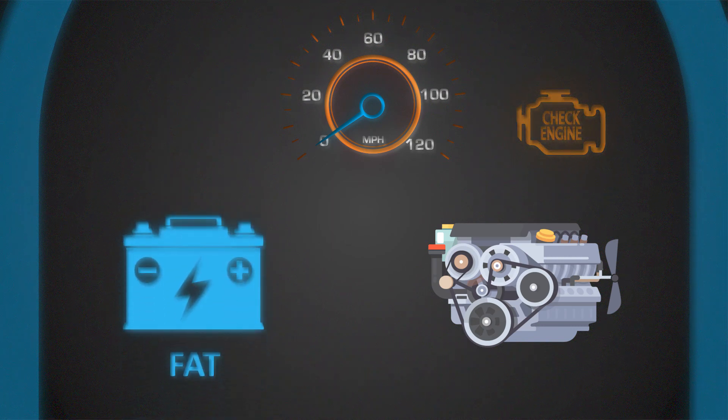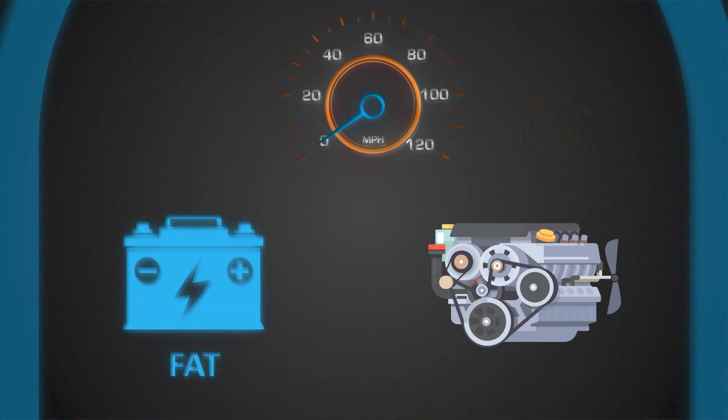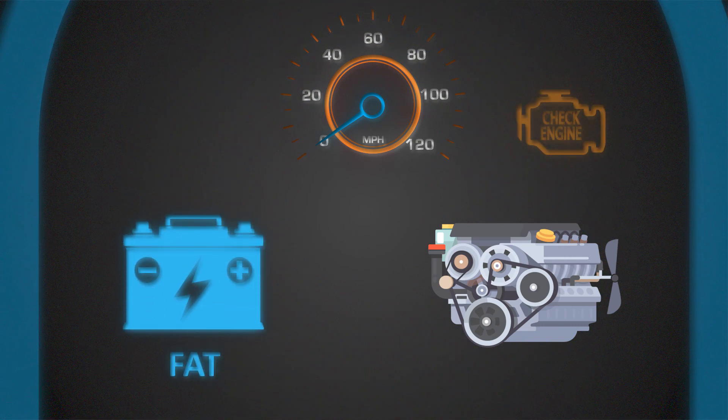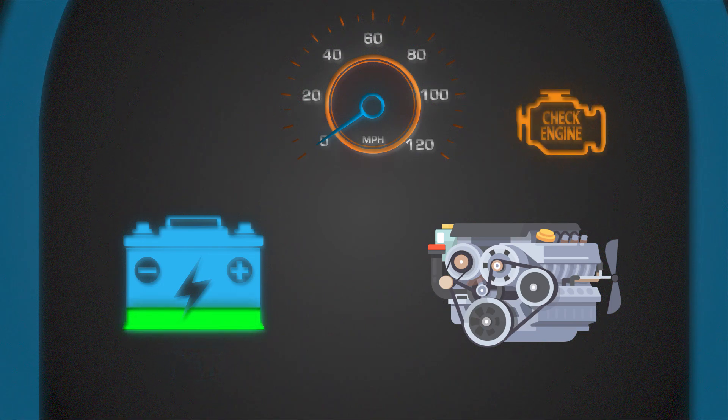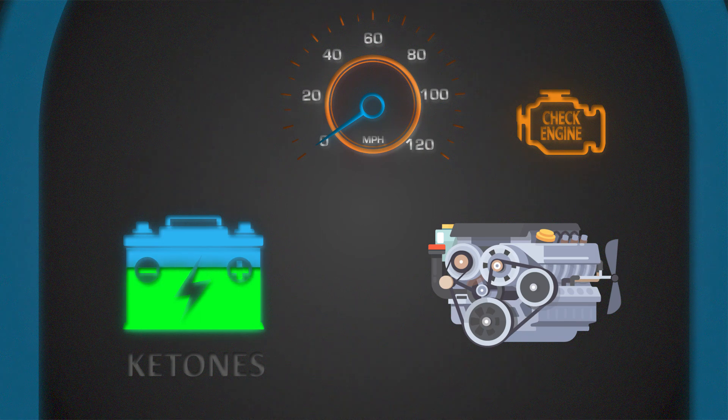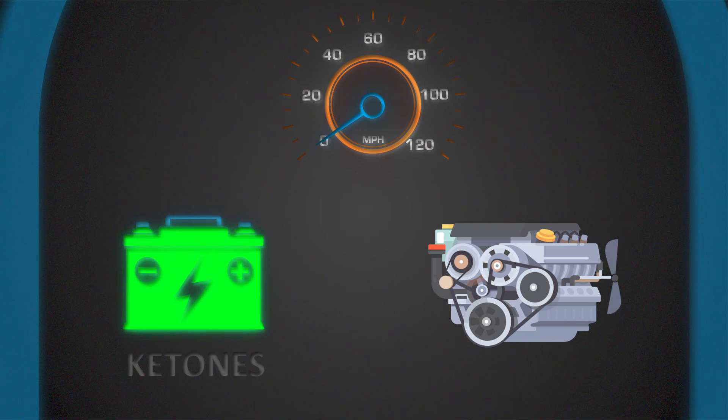Your body then turns to the fat stored in your cells in a process that produces fatty acids that are absorbed by your blood. These acids ultimately create a byproduct called ketones, a new source of energy for your body.